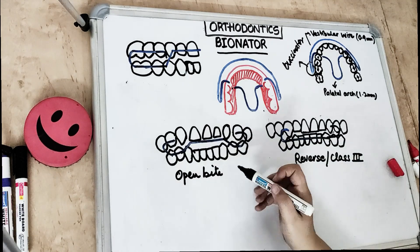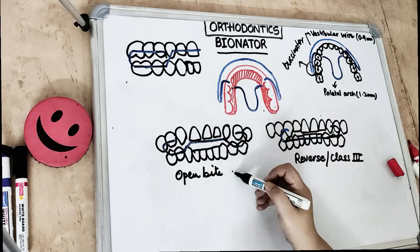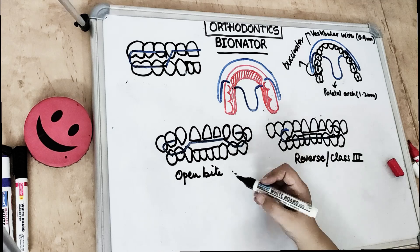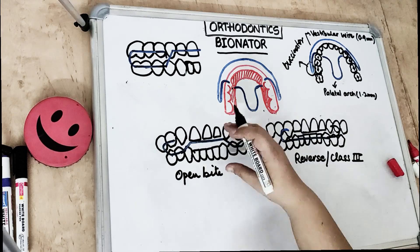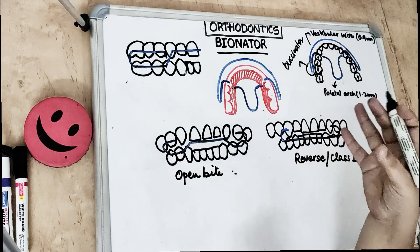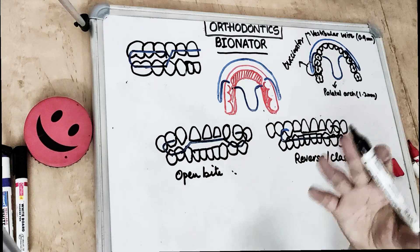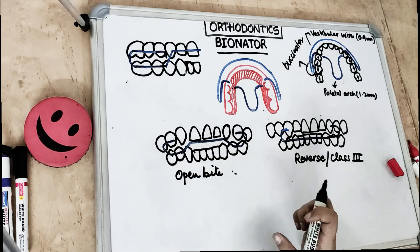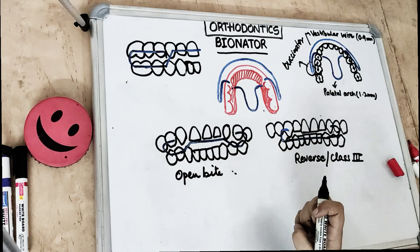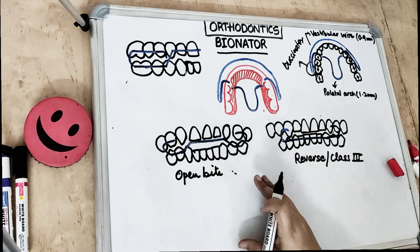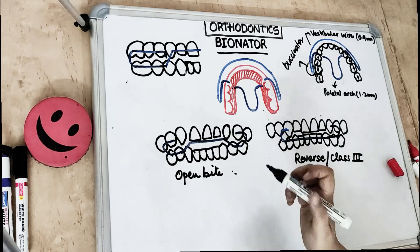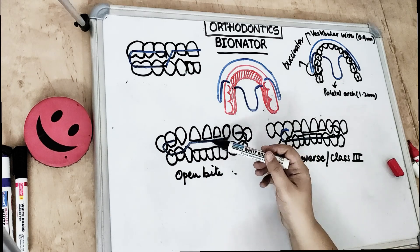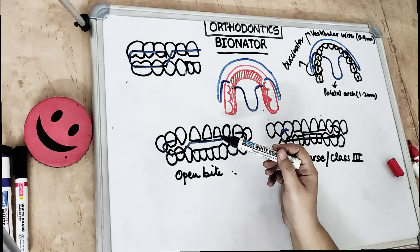The open type Bionator is used to close the anterior open bite. The acrylic lower lingual part extends into the upper incisor region as a lingual sheet, closing the anterior space without touching the upper teeth. The bow of the open bite runs between the upper and lower incisors at the height of lip closure.